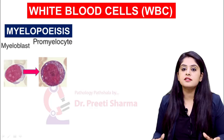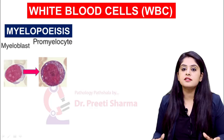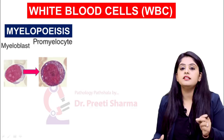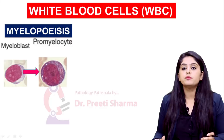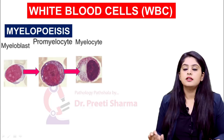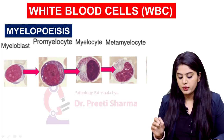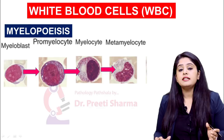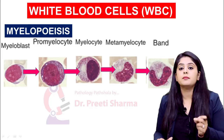The promyelocyte is actually the biggest cell in this entire series. After the promyelocyte, as soon as you see a cell which has a D-shaped nucleus, it is a myelocyte. After this, the next cell that comes is a metamyelocyte, where you see the nucleus is now showing some indentation. When that indentation increases further, what we get is a band cell.